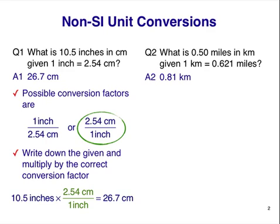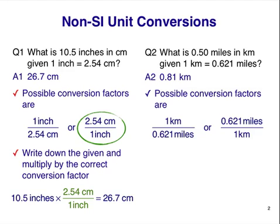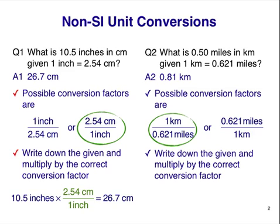Compare this question to the one on the left. They're almost identical. Following the same idea, we'll construct two possible conversion factors. They look like this. Then we'll write down what we know from the question, the given, including its units, and multiply by the appropriate conversion factor. Here's the answer.